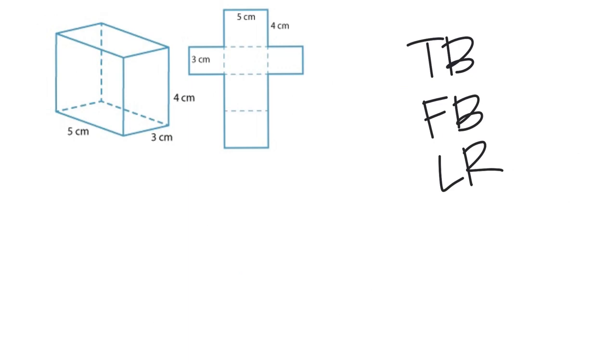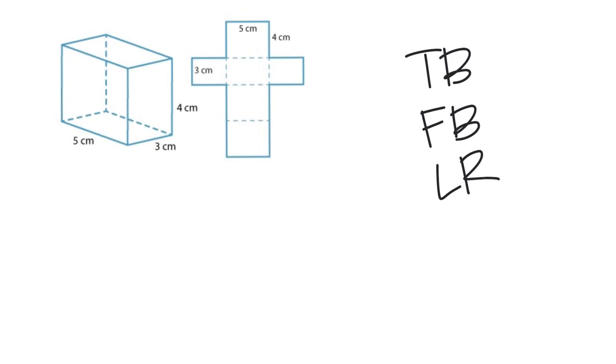So first I have my three measurements are three, five, and four. I'm going to decide first top and bottom. I'm just going to look at these shapes. When I look at these, I'm going to call this top, I'm going to call this bottom, I'm going to call this front and this back, and then I'll call my last one left and right.